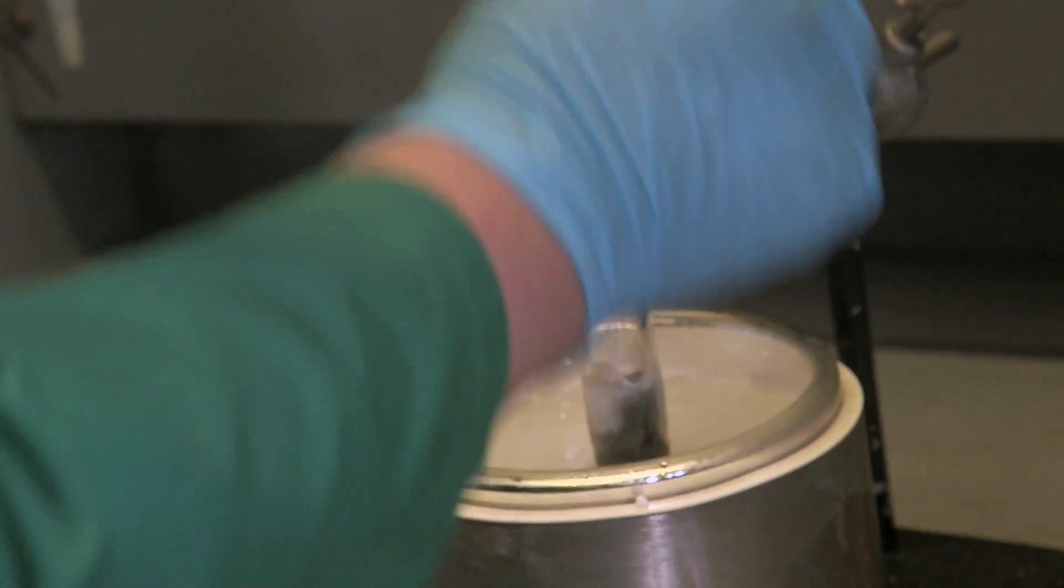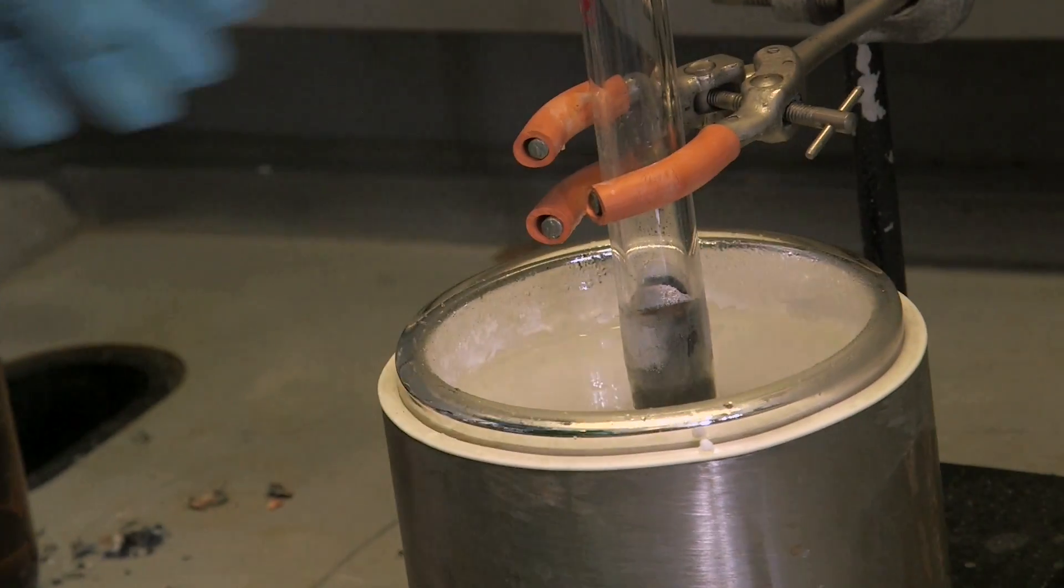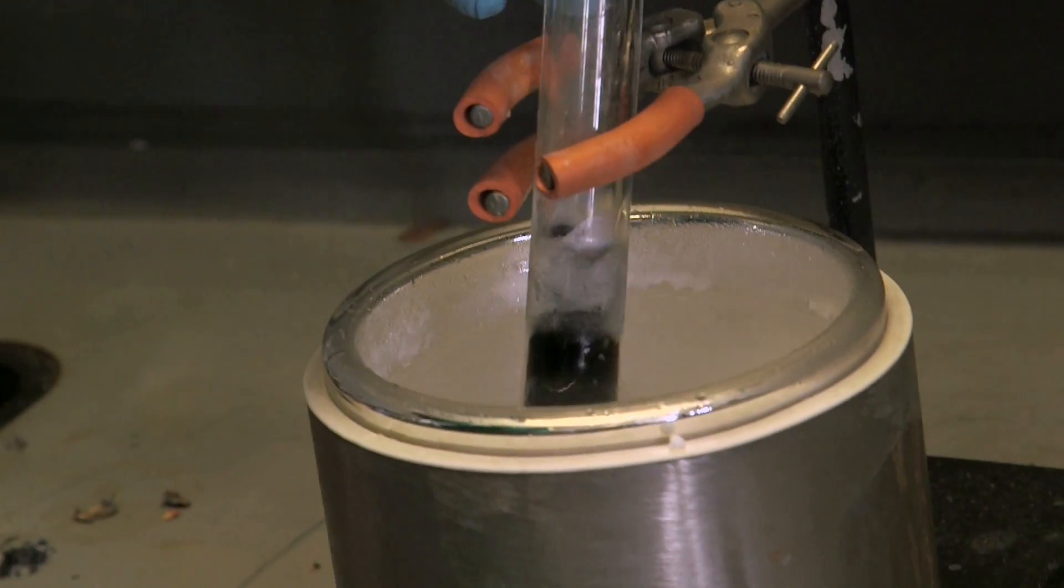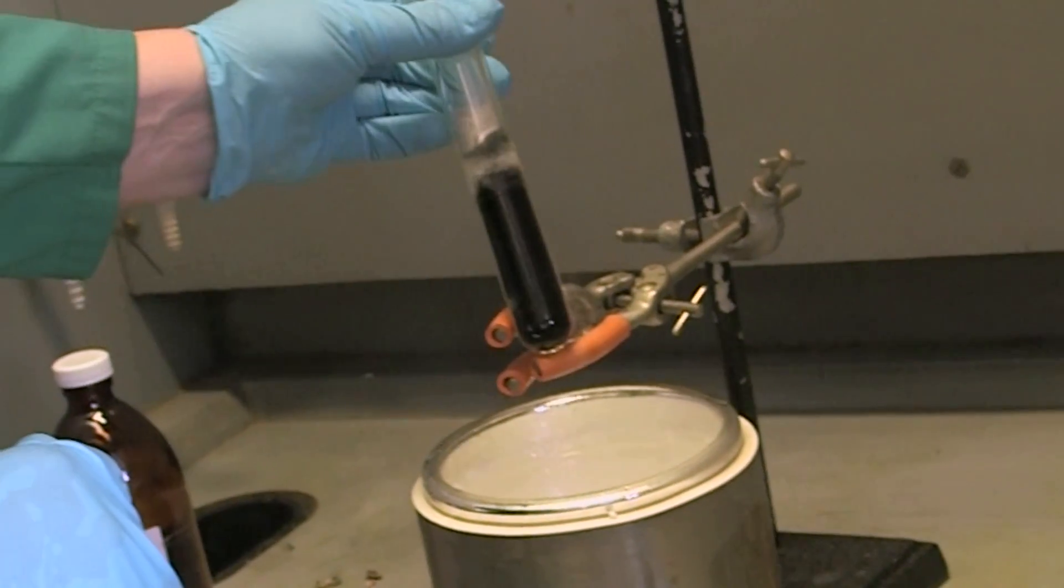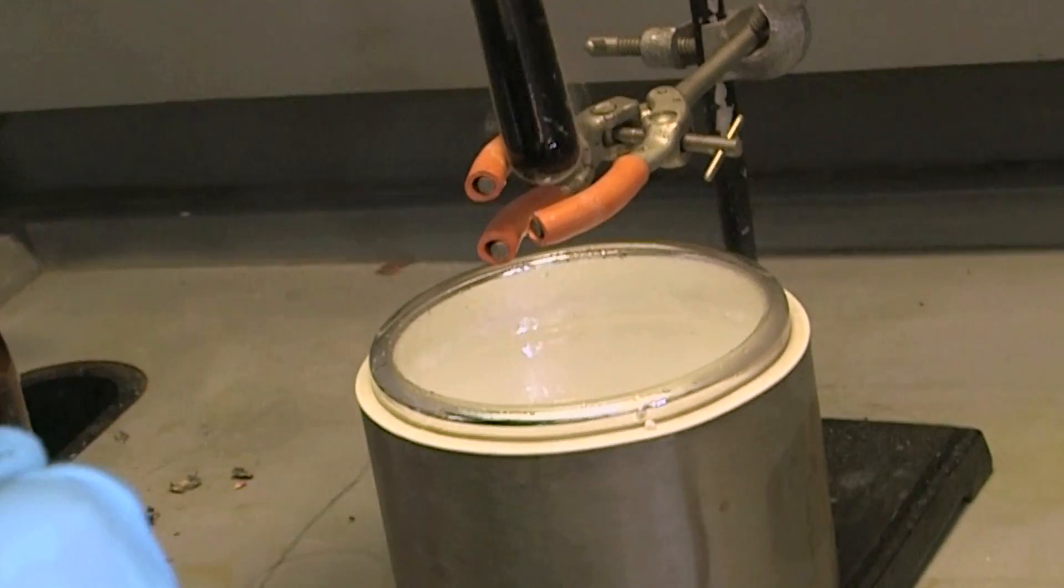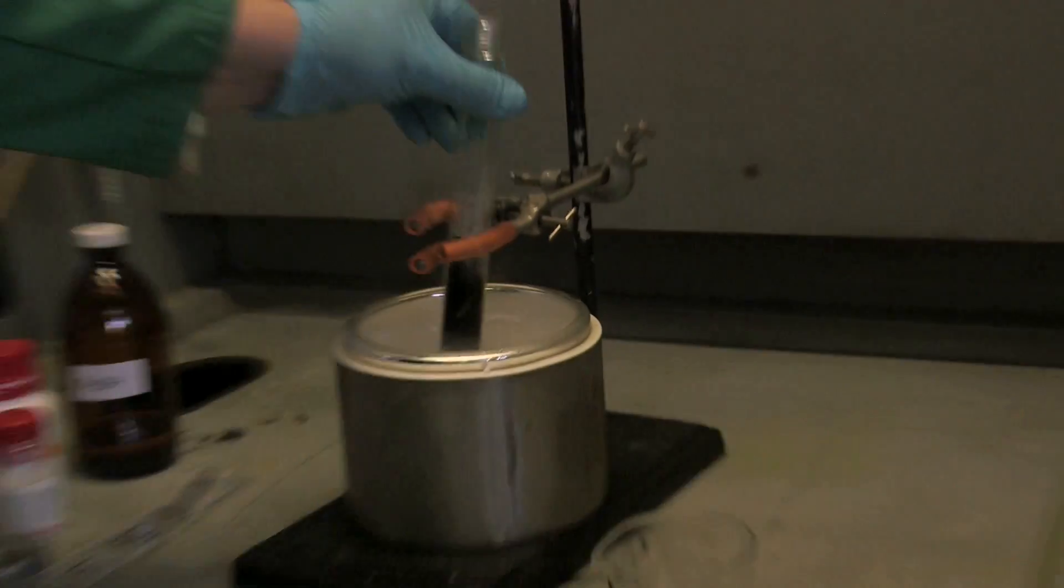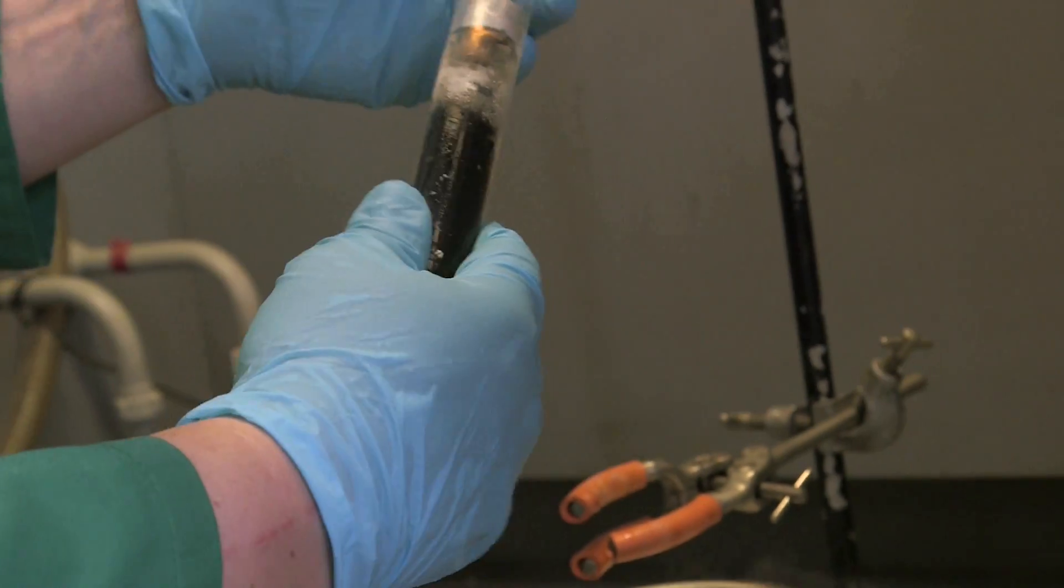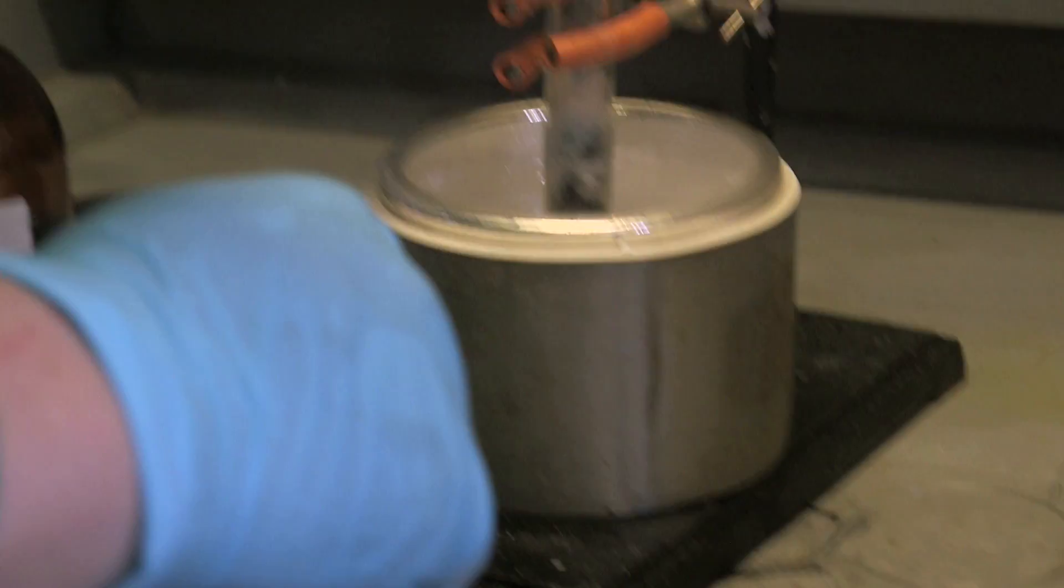Put some more sodium in there. And you can hear it fizzing as it reacts. So we've got a really, really intense blue color now. Almost looks black. So let's put that in there. I would have thought that would be enough, but you never know. See, we're already starting to see some of that bronze on the surface.